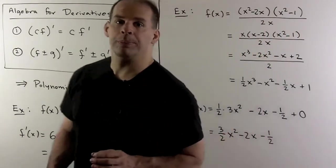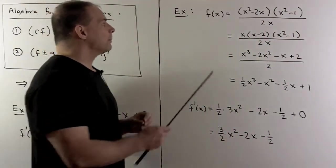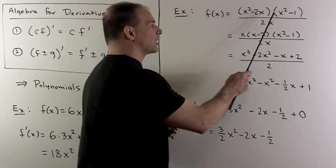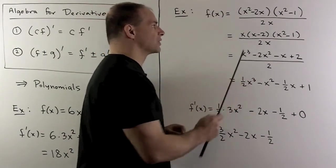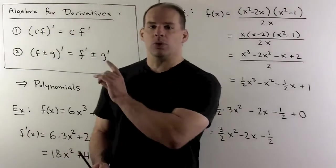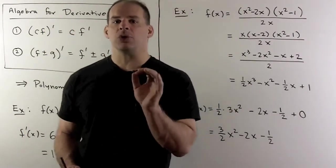For another example, let's try f of x equal to x squared minus 2x times x squared minus 1 over 2x. Now, with the rules we have so far, we don't know how to address a quotient.